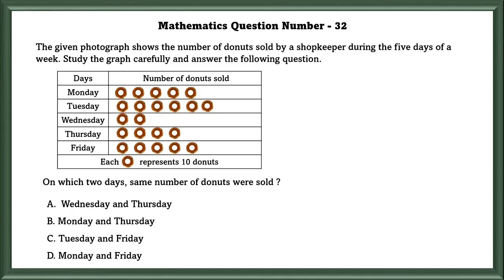Mathematics question number 32. The given photograph shows the number of doughnuts sold by a shopkeeper during 5 days of a week. Study the graph carefully and answer the following questions. On which two days was the same number of doughnuts sold? As we can see, Monday and Friday have the same day because both of them have 50 doughnuts.